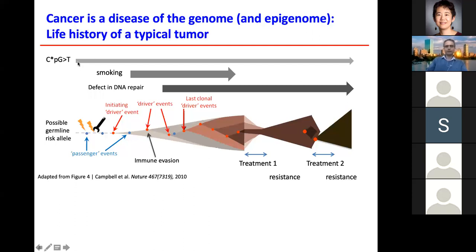These mutations are caused by different mutational processes. There are natural processes that occur in every cell, like CpG-to-T transitions from methylated cytosines, which occur throughout life. Other signatures are caused by external carcinogens like cigarette smoke, generating their own mutation patterns. Additionally, a driver event such as losing a DNA repair mechanism can cause cells to accumulate more mutations due to reduced repair of damage during cell division.